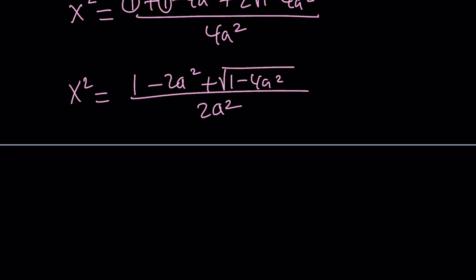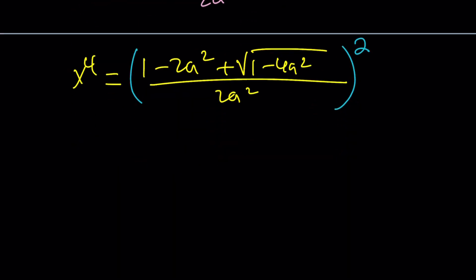How do you find x to the fourth power? To find x to the fourth, we're going to square both sides. So let's go ahead and square this. Let's go ahead and square this expression. I'm going to go ahead and square both sides. So we'll get x to the fourth and x to the fourth.